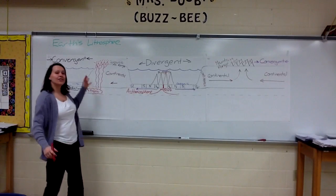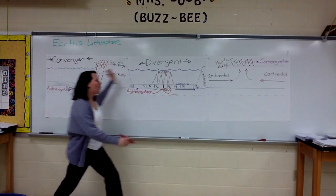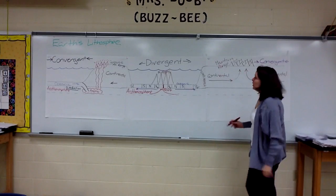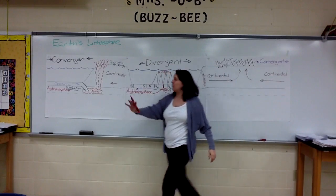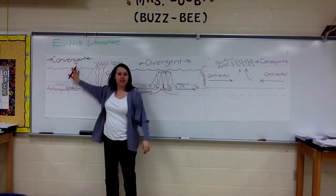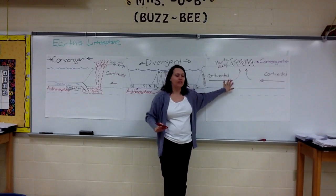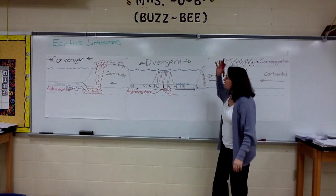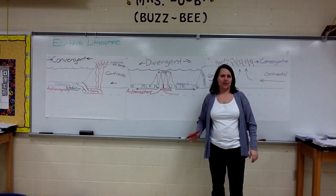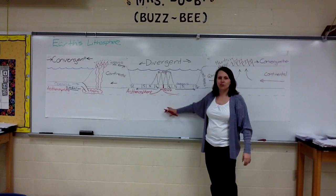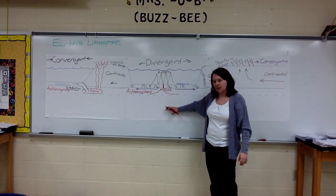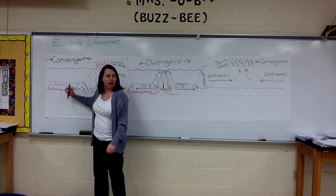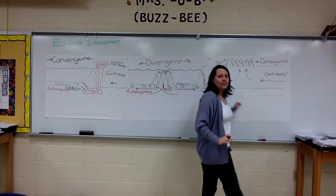It's time for us to put the whole thing together. We have a divergent boundary, we have a convergent boundary, and we have a convergent boundary here. But what we don't know is why. Why is there a divergent boundary right here, and why is there a convergent boundary over here and here?